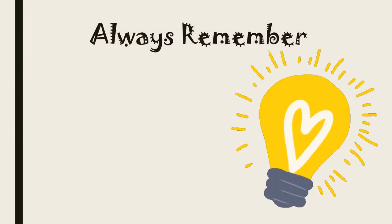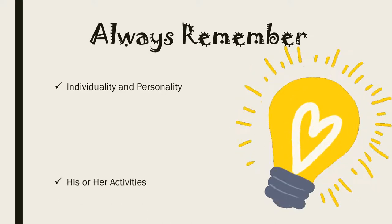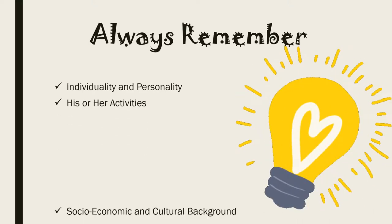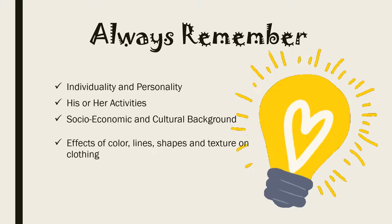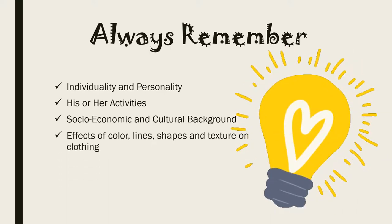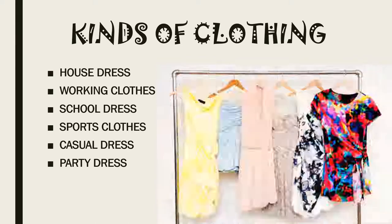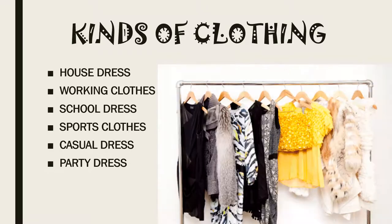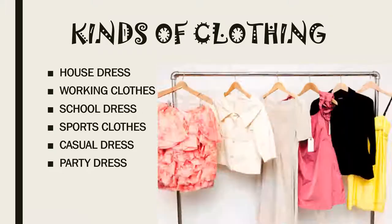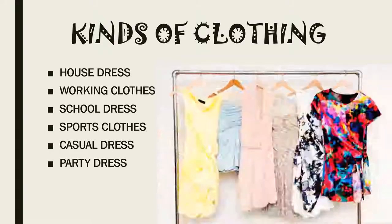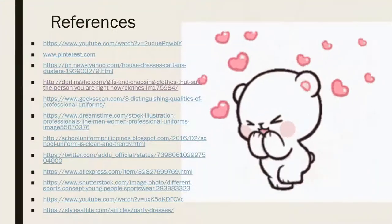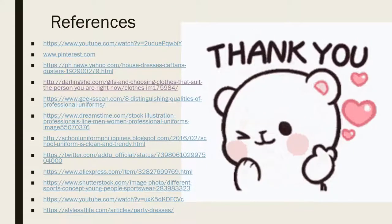We have to always remember that the things we need to consider in dress designing are: the individuality and personality of the person, his or her activities, the socio-economic and cultural background, as well as the effects of color, line, shapes, and texture. The kinds of clothing are the house dress, the working clothes, school dress, sports clothes, casual dress, and the party dress. Thank you very much and I hope you have learned a lot today.